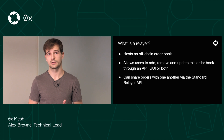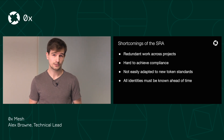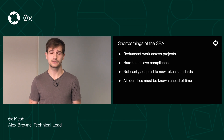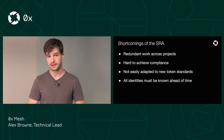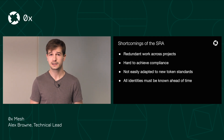Relayers can also share orders with each other through something called the standard relayer API. There are a couple of issues with the standard relayer API, especially as it relates to relayers sharing orders with one another. It requires a lot of redundant work across relayers because a lot of them are written in different programming languages and they have to build their own SRA implementations for each language. It's also been hard to achieve compliance — not every relayer implements the SRA in exactly the same way, and we've seen subtle differences between them, especially as it relates to error handling and some edge cases.